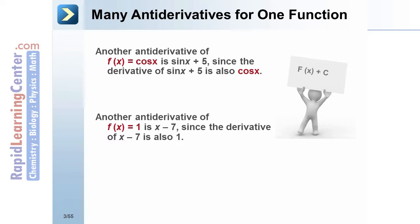Another antiderivative of f(x) = 1 is x - 7, since the derivative of x - 7 is also 1.